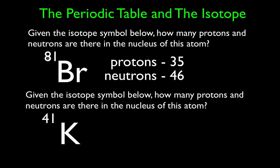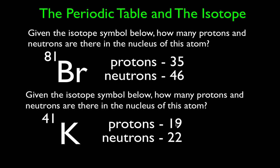Last one: given the isotope symbol, how many protons and neutrons are there? This is K — in German, Kalium; in English, we say potassium. We look on the periodic table and find potassium, and you'll notice it's element 19. That's its atomic number — the number of protons in the nucleus is 19. Now, how many neutrons are there? This is the mass number, which is protons plus neutrons. The number of neutrons must be 22. We can check: 19 plus 22 is 41, which matches the mass number.